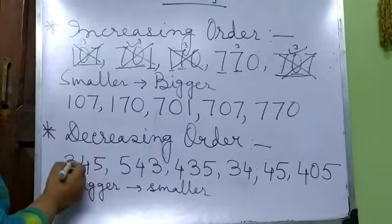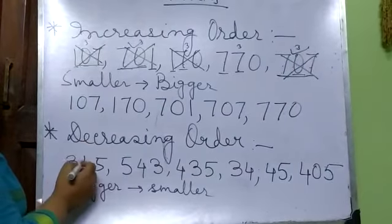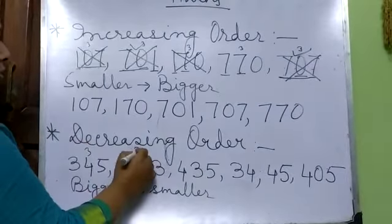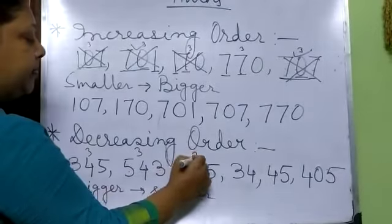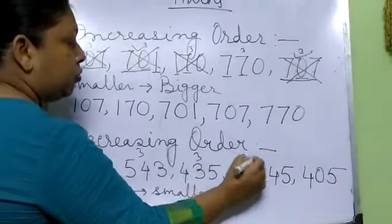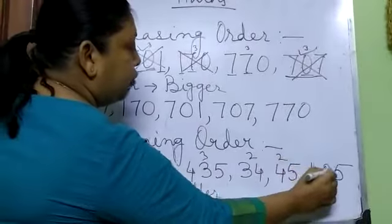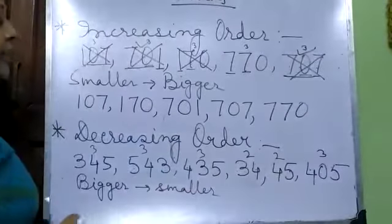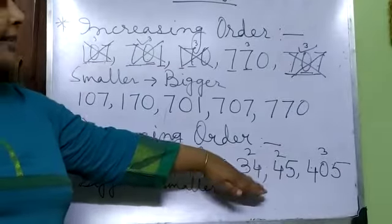Here, how many digits are there? We count the digits of each number — 3 digits, 3 digits, 3 digits, 3 digits, then 2 digits, 2 digits, 2 digits, 3. So these are the 2-digit numbers.